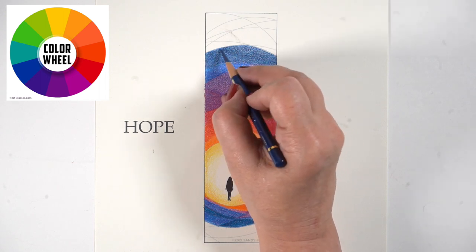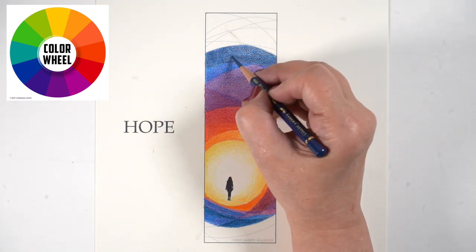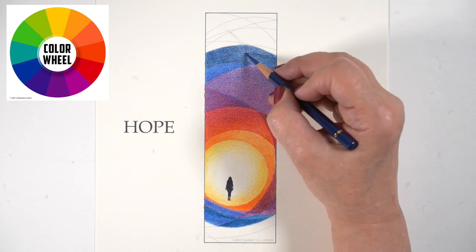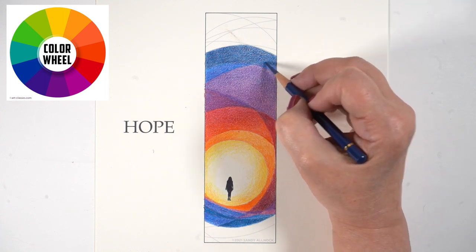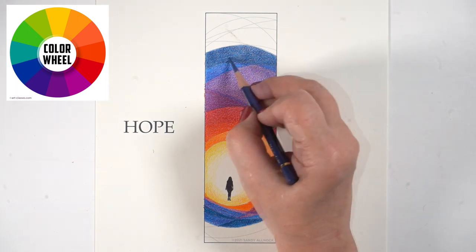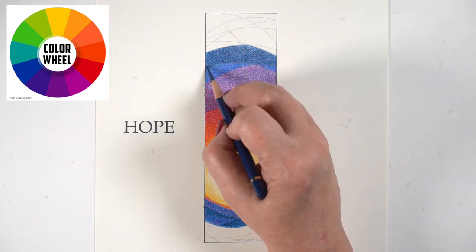Now back to the artwork. I'm moving out to the edges now. And you can see I'm getting more into purples and blues and getting out there on the color wheel. And I opted to just stop at purples and blues.